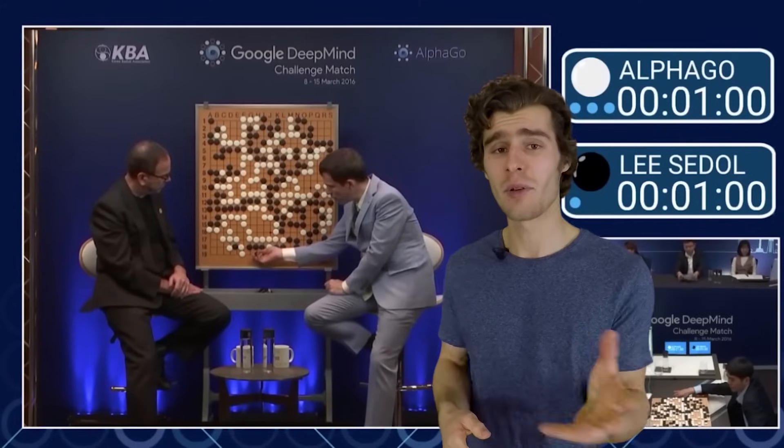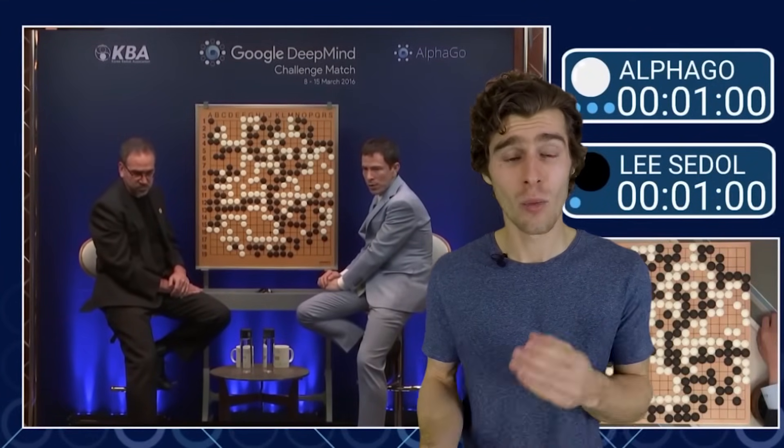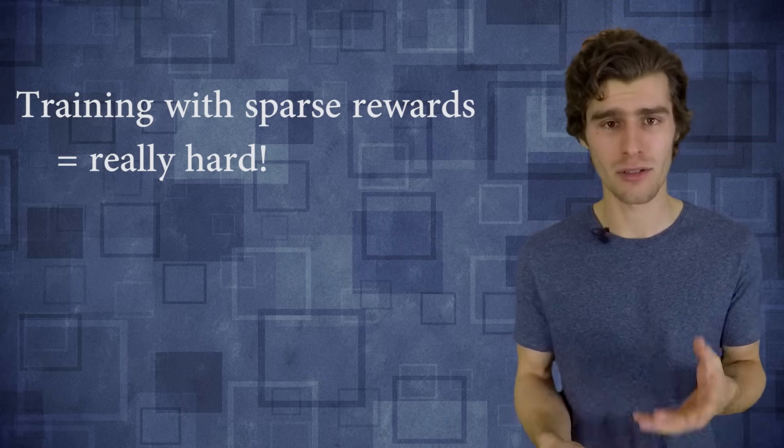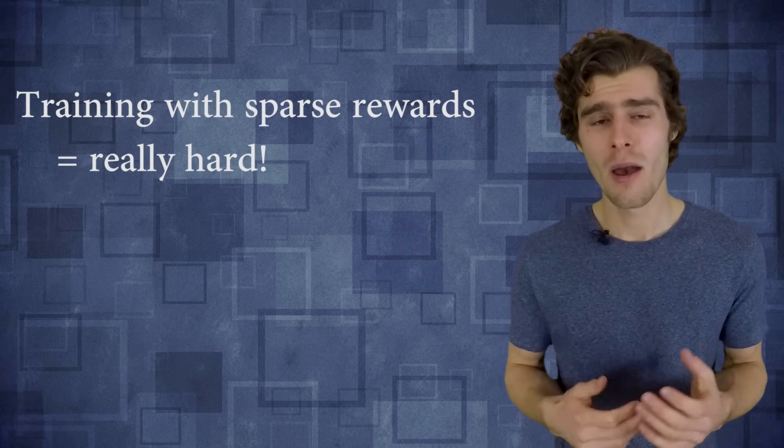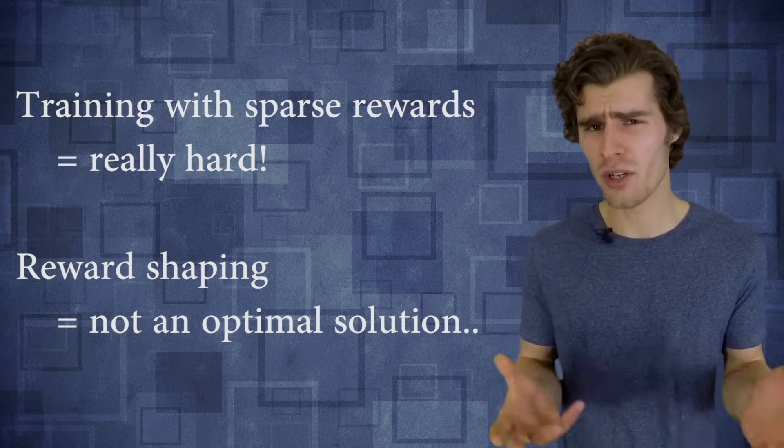And finally, in some cases like AlphaGo, for example, by definition, you don't want to do any reward shaping because this will constrain your policy to the behavior of humans, which is not exactly optimal in every situation. So the situation that we're in right now is that we know that it's really hard to train in a sparse reward setting, but at the same time, it's also very tricky to shape a reward function, and we don't always want to do that.